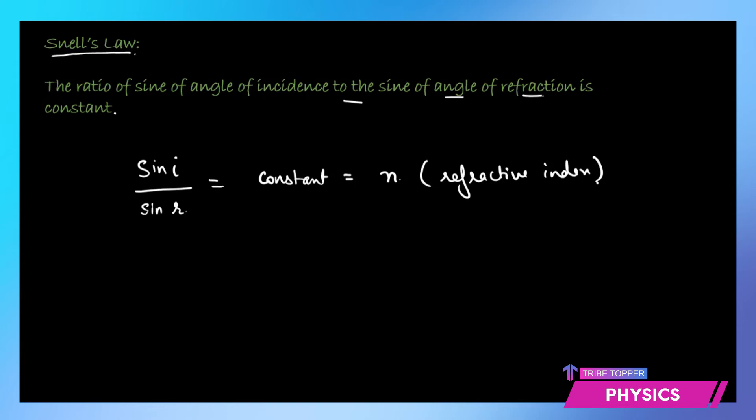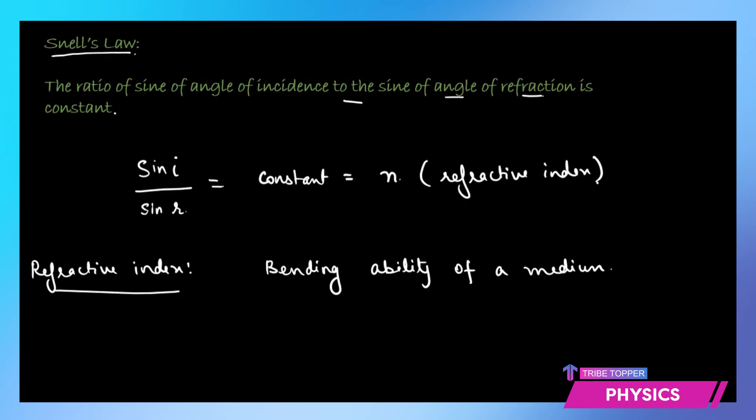What does refractive index actually mean? The mathematical relationship is sine i divided by sine r equals n. But physically, refractive index indicates the bending ability of a medium. If a medium has a high refractive index, it is going to bend the ray more. If it has a lower refractive index, it is going to bend the ray less.